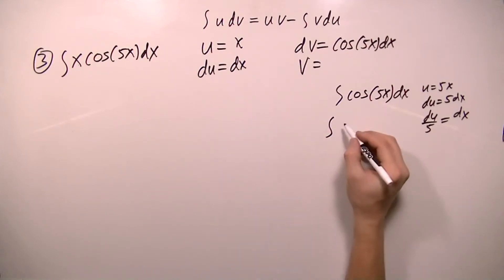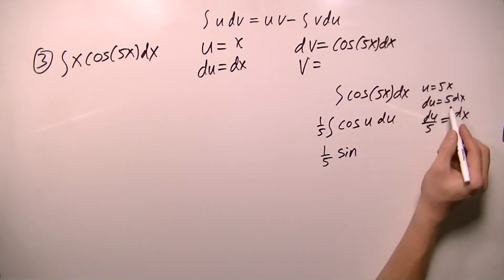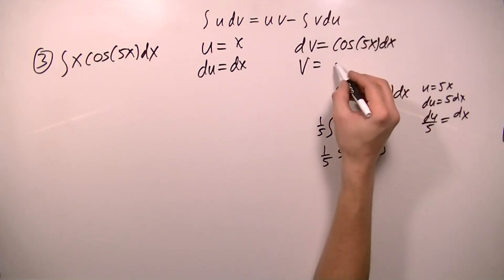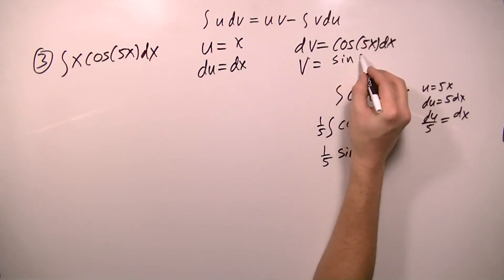So I can rewrite this integral as cos u, and dx is du over 5. So I'm going to factor out the one fifth. And when I take this integral, I get one-fifth sine, and for u, I'm going to plug back in my 5x. So v will equal sine 5x over 5.